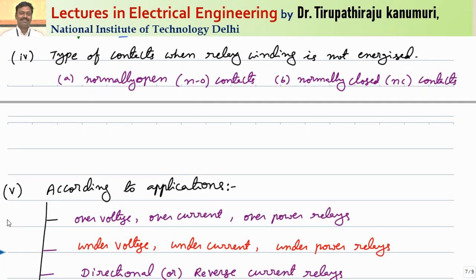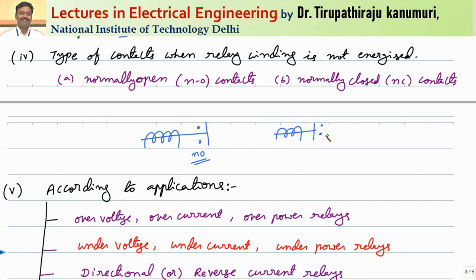Regarding the type of contacts when the relay winding is not energized: if the contacts are open when the relay is not energized, it is called a normally open type. When the relay current crosses the limit, it is attracted and closes the contacts. The second type — where the contacts are normally closed — means they are in the closed position when not energized, but whenever the relay is energized, they open. This is called the normally closed type.